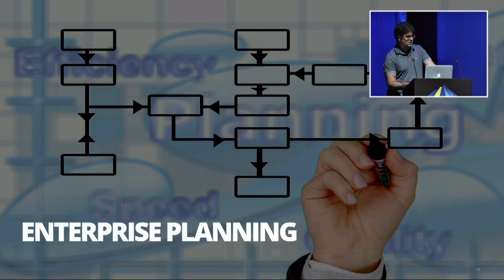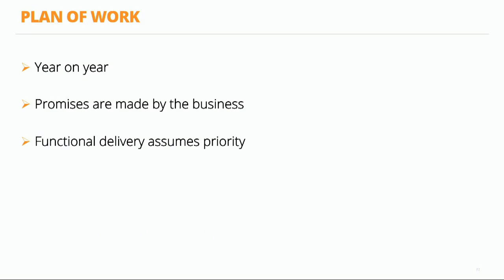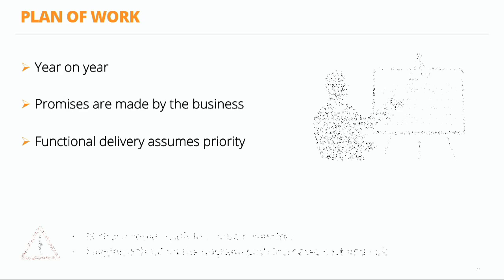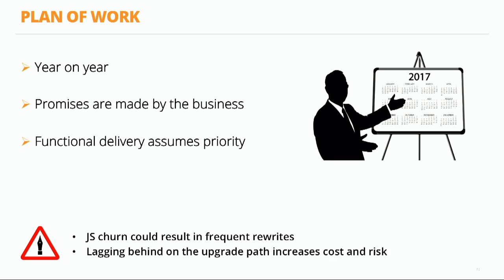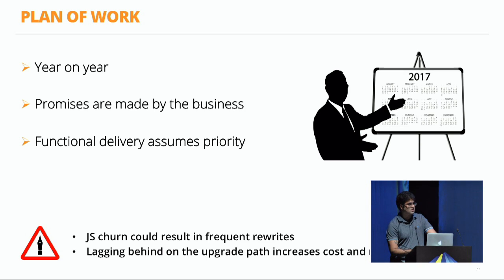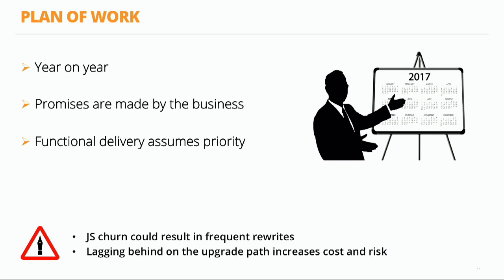The next part is enterprise planning. Many enterprises budget once a year, planning a full year's worth of work, and these promises are made by the business to their customers. Once that is done, functional delivery assumes priority. The JavaScript world is a lot of fun, but there's also a lot of churn, and this churn could result in frequent rewrites — which is often unanticipated in a year-long plan. If we don't stay on the upgrade path, this increases the cost and risk.